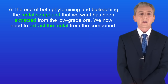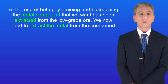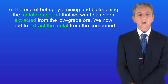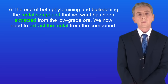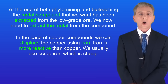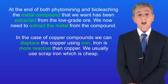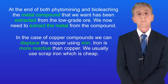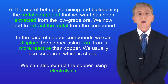At the end of both phytomining and bio-leaching, the metal compound that we want has been extracted from the low-grade ore. We now need to extract the metal from the compound. In the case of copper compounds we can displace the copper using iron, because iron is more reactive than copper. We usually use scrap iron, which is cheap. We can also extract the copper using electrolysis.